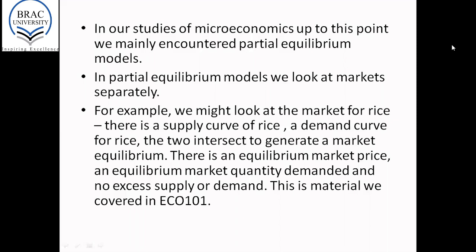Up to this point we have mainly encountered partial equilibrium models. In ECO 101 you will remember that we did models of supply and demand, and those were partial equilibrium models. We assumed everything else remained the same — the ceteris paribus assumption — where things are held constant and only one variable is allowed to change. In demand and supply diagrams, if we allowed the price only to change, then the quantity demanded and supplied would also change.